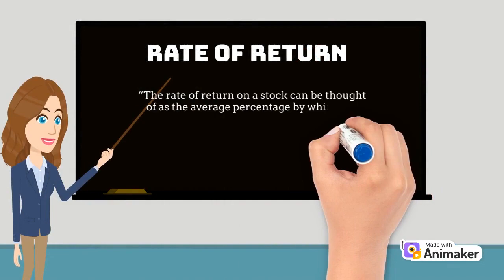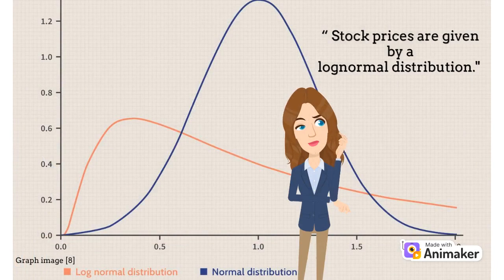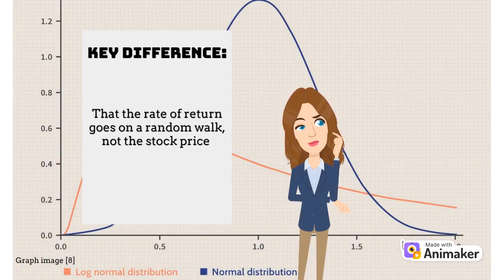This would mean stock prices are given by a lognormal distribution, implying the rate of return goes on a random walk, not the stock price which is a key difference.